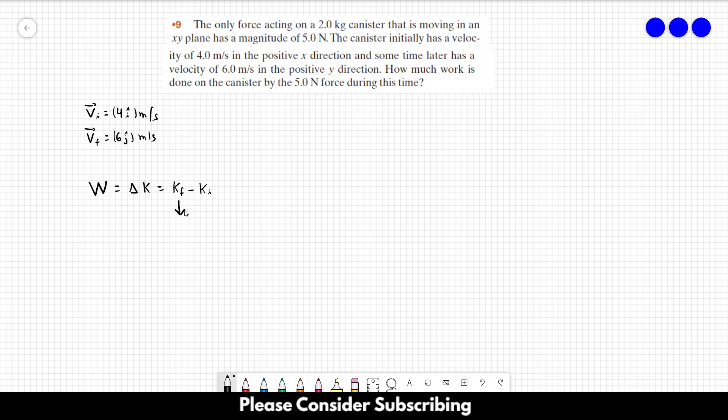And the final kinetic energy is equal to mass times the absolute value of the final velocity squared over 2. We know that the absolute value of the final velocity is just this number over here of the final, not the initial, the final velocity is this one, just 6 meters per second.